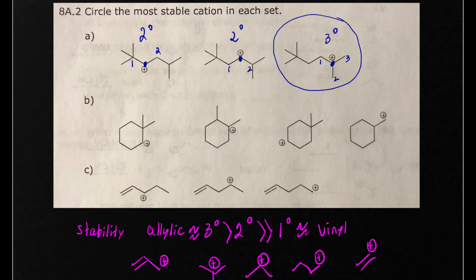In part B, let's do the same thing. Highlight where your carbocation is located. Count how many carbons are attached to that. This has two, so that's secondary. This has a total of three carbons directly attached, so that's tertiary. This has two and this has just one. So of all of these, the tertiary carbocation is going to be the most stable.